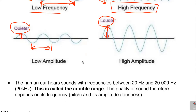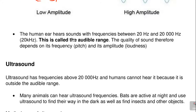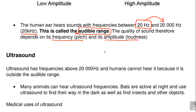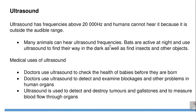The human ear can hear sounds with frequencies between 20 Hz and 20,000 Hz, which is 20 kilohertz. This is called the audible range. They may ask you: what is the audible range of a human ear? The answer is from 20 Hz to 20,000 Hz. The quality of sound depends on its pitch — which is frequency — and its loudness — which is amplitude.